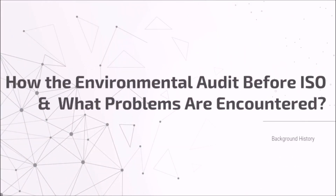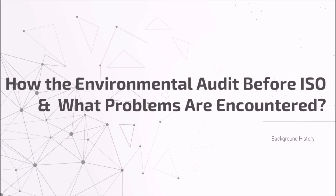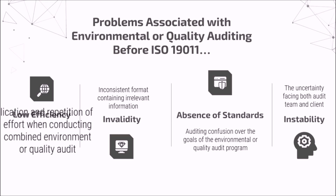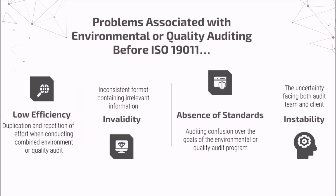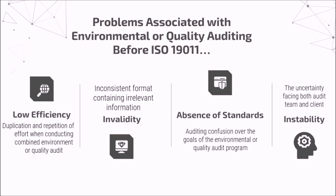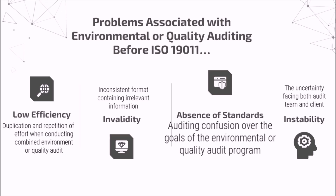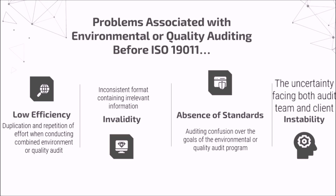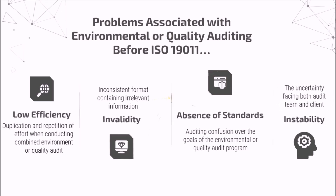What does environmental auditing actually contribute to auditing work? Before the announcement of ISO 19011, our auditors met plenty of issues. Low efficiency occurred all the time because of duplication and repetition of effort when conducting combined environmental or quality audits. Invalid auditing reports could stem from inconsistent formats containing irrelevant information. Auditing confusion resulted from weak goals of environment and quality audit programs, and the uncertainty facing both the audit team and client always brought instability to the audit report.